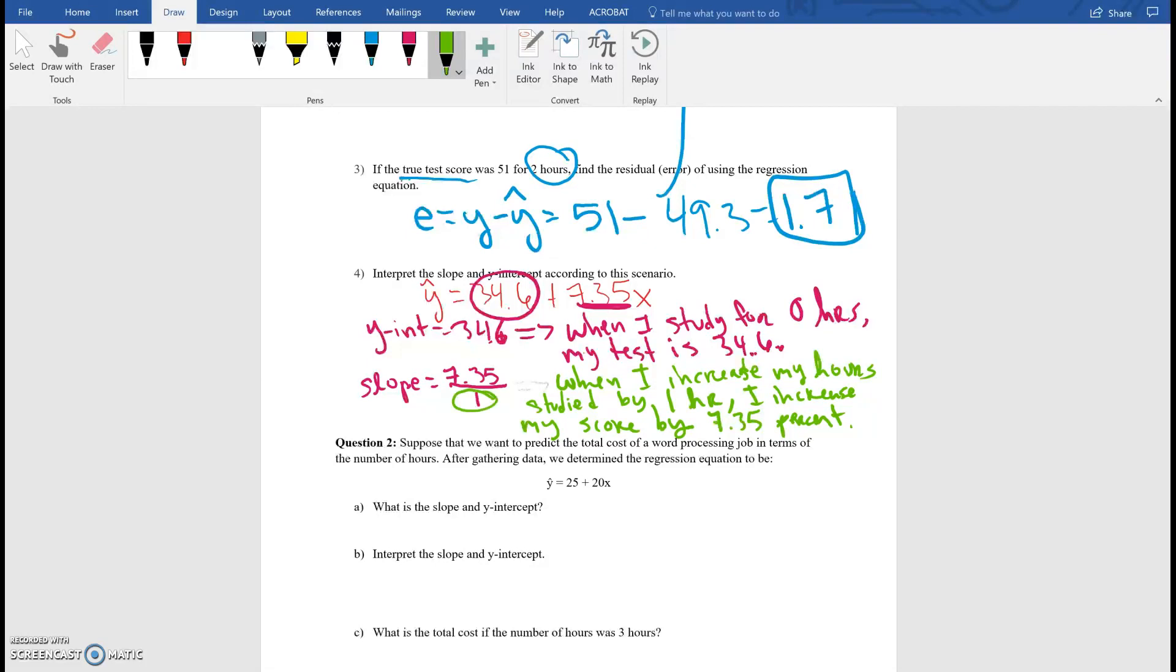So what this basically means is that this is my X value. The number below it is my X value. So when I increase my X value, which is my hours, for every hour that I study, how many points am I increasing my score by? 7.35. So every additional hour that I study, I will increase my test score by 7.35. That's all that it is.